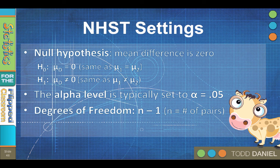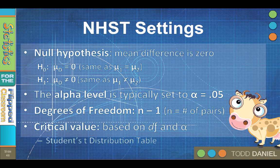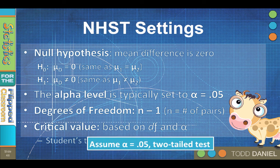The degrees of freedom for paired samples is n minus 1, where n equals the number of pairs. The critical value is determined based on degrees of freedom and alpha, and you will look up the critical value in the Student's t-distribution table, which is also available on the last page of your notes. You can assume the t-test is alpha equals 0.05, two-tailed test, unless you were told otherwise.